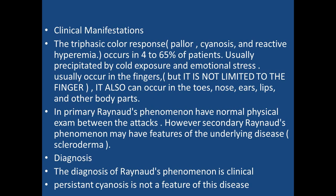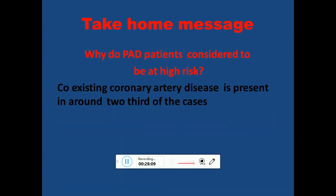Secondary Raynaud's phenomenon may harbor features of underlying disease, notably scleroderma. Diagnosis is usually clinical with markers of underlying disease sought. Persistent cyanosis is not a feature. As a key message, patients with peripheral vascular disease are considered high risk because peripheral atherosclerosis is a systemic process, and co-existing coronary artery disease is very likely and must be considered.